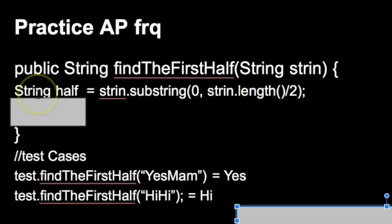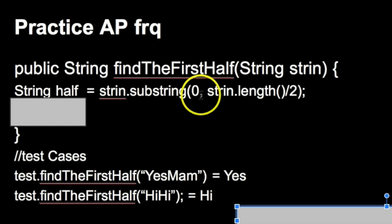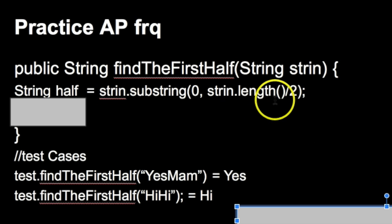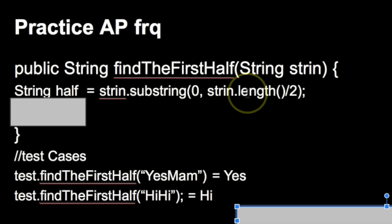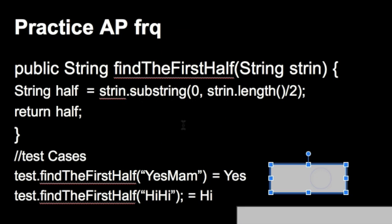We set a local string called half, and we say half equals string.substring(0, string.length() / 2), because we're finding the first half. Starting at index 0 and going up to half the string's length will give exactly the first half. Then we return that string, and it prints half of the original string.